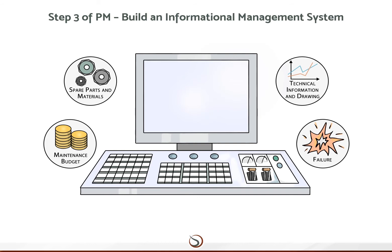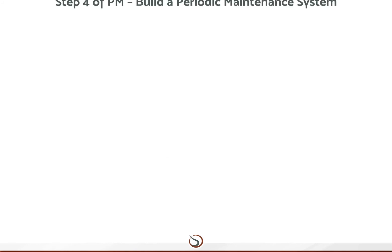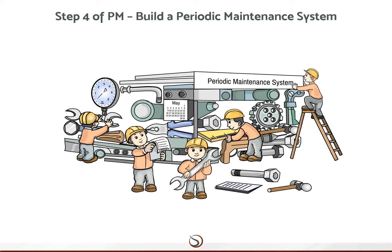The company must set a computerized data processing system consisting of: a Failure Data Management System, a Computerized Maintenance Budget System, a Spare Parts and Materials Control System, and a Technical Information and Drawing Control System.